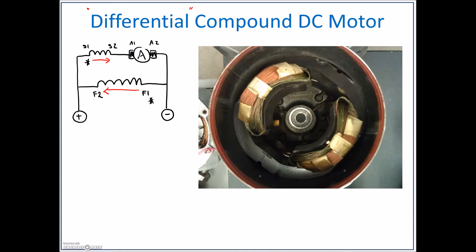We want the two magnetic fields to be additive or cumulative. We want them to combine together. You can see here that the shunt winding and our series winding are wound right on top of each other.